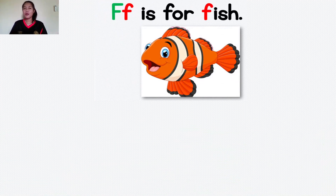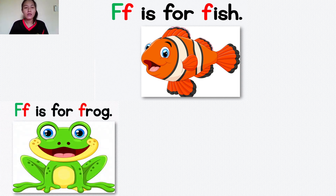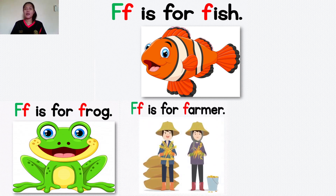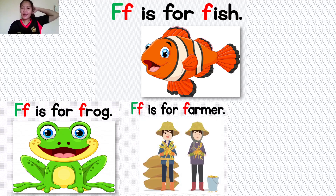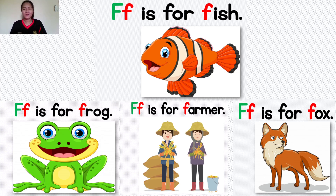Let's see the letter F. The letter F is for fish. Fish. The letter F is for frog. Frog. The letter F is for farmer. Farmer. Good. And the letter F is for fox. Fox. Very good.